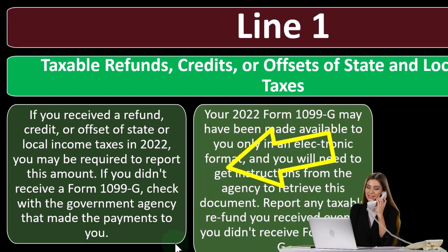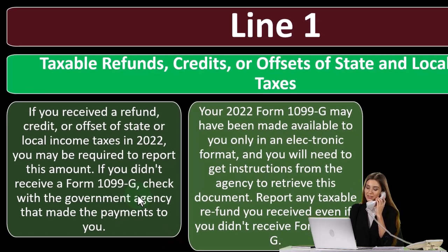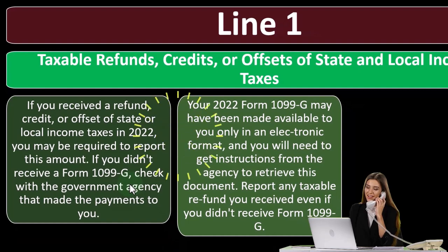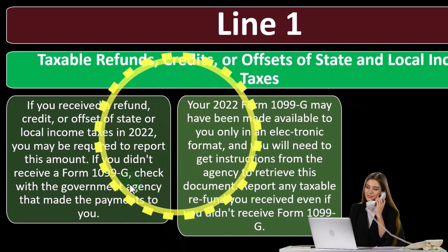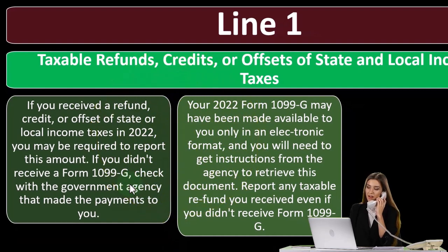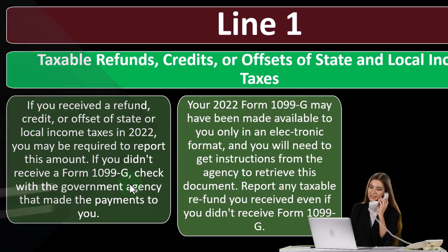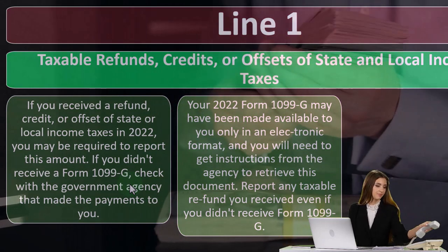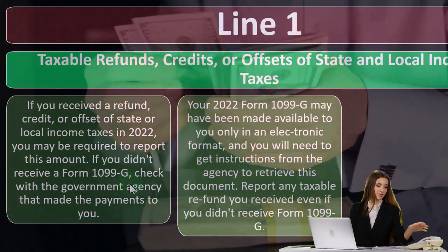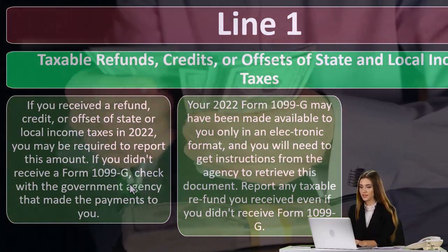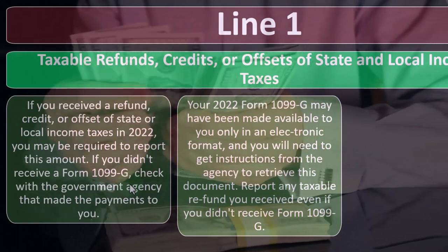Typically you'll get a 1099-G. The 1099 is the form that usually indicates that you have to record something as income. But it's only income in a certain situation if you got a benefit from it in the prior year.